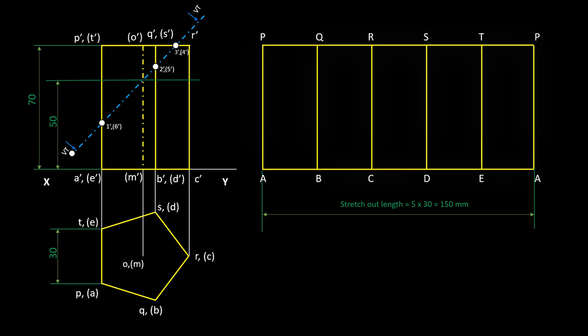Stretch out length of the pattern will be the perimeter of the regular pentagon. Let's mark the sectional points on the pattern. Section point 1 cuts the edge AP. So project point 1 to the edge AP in the pattern.